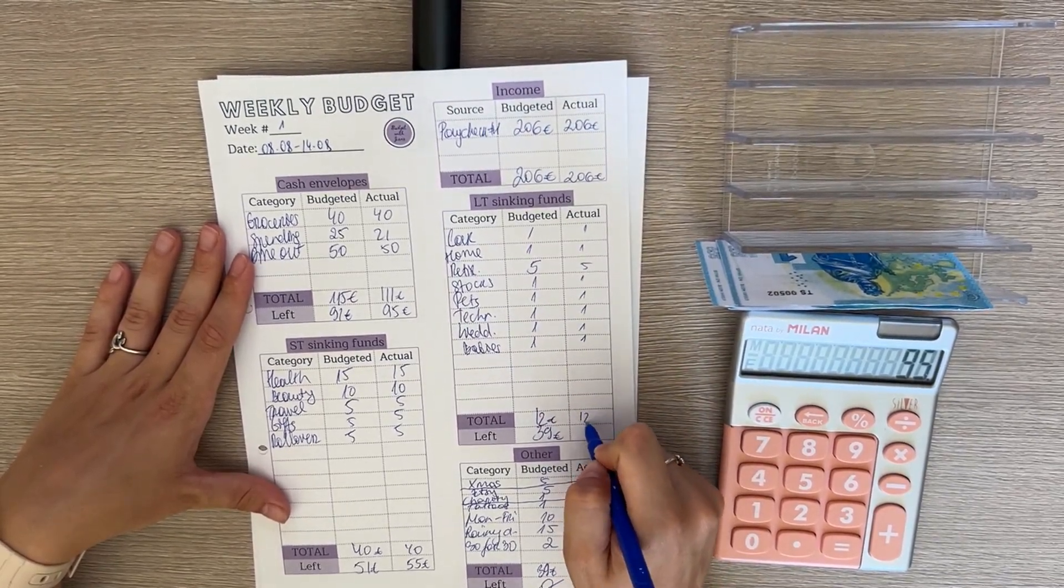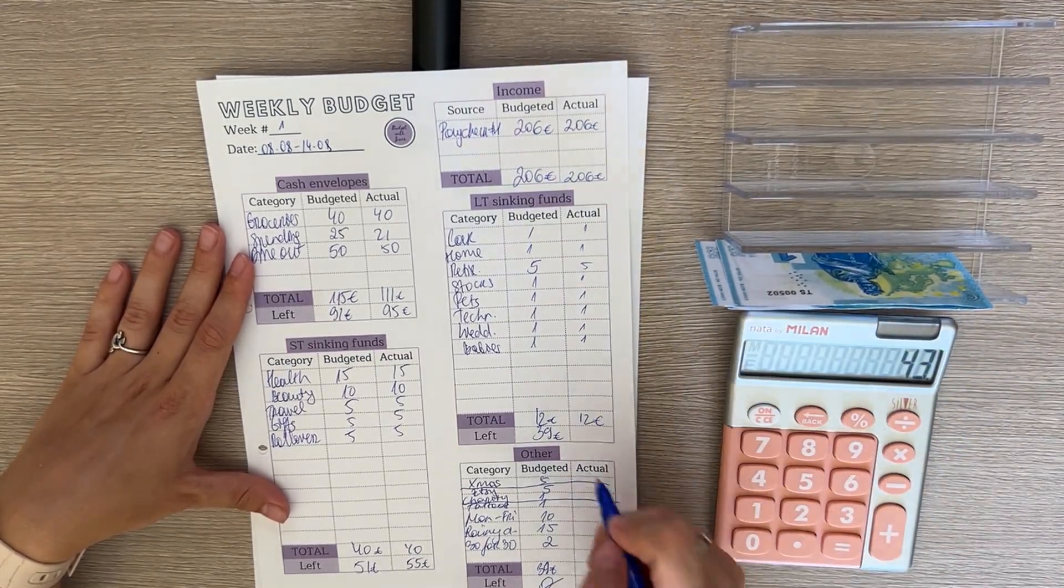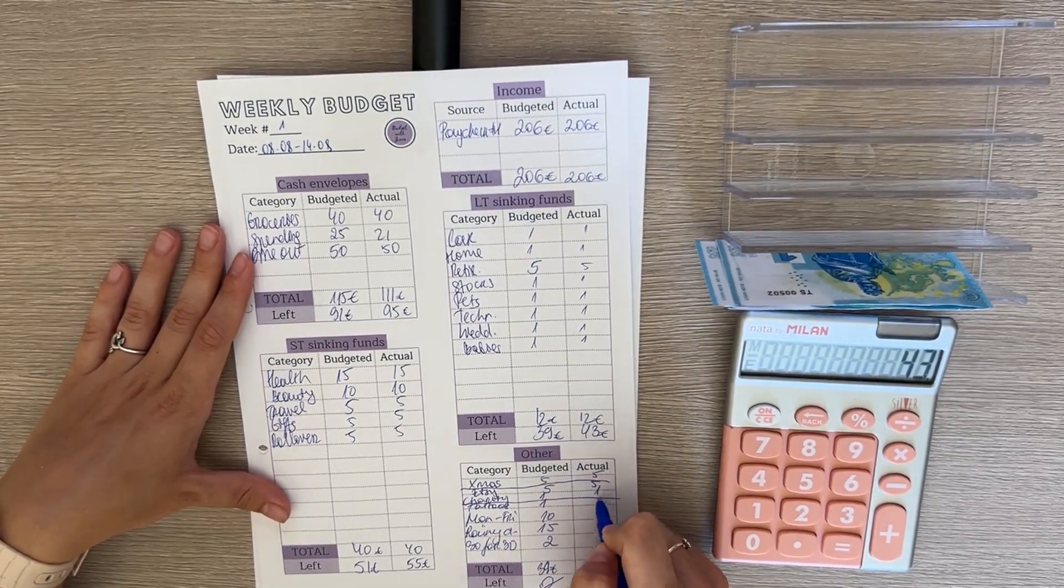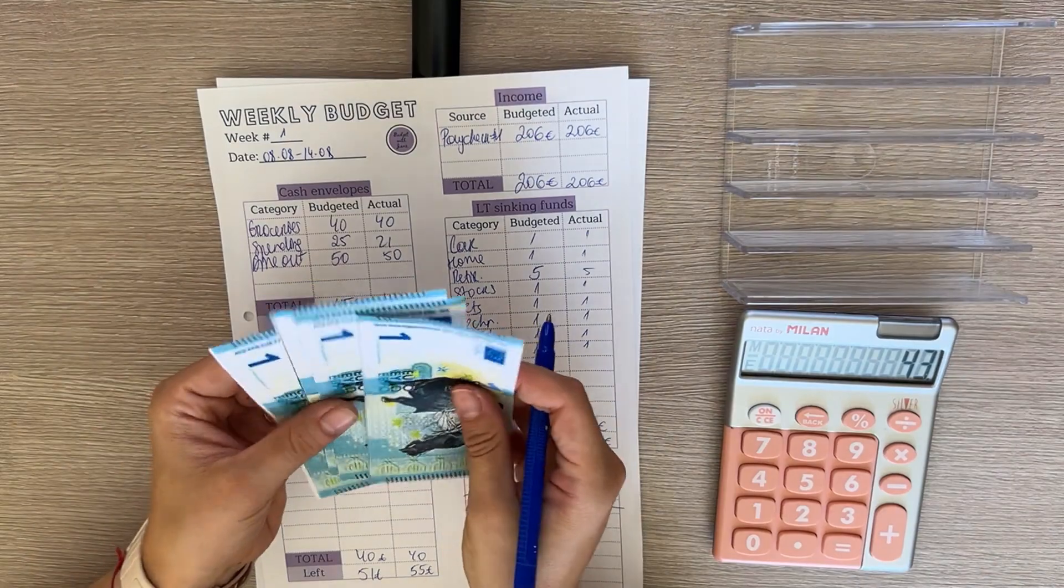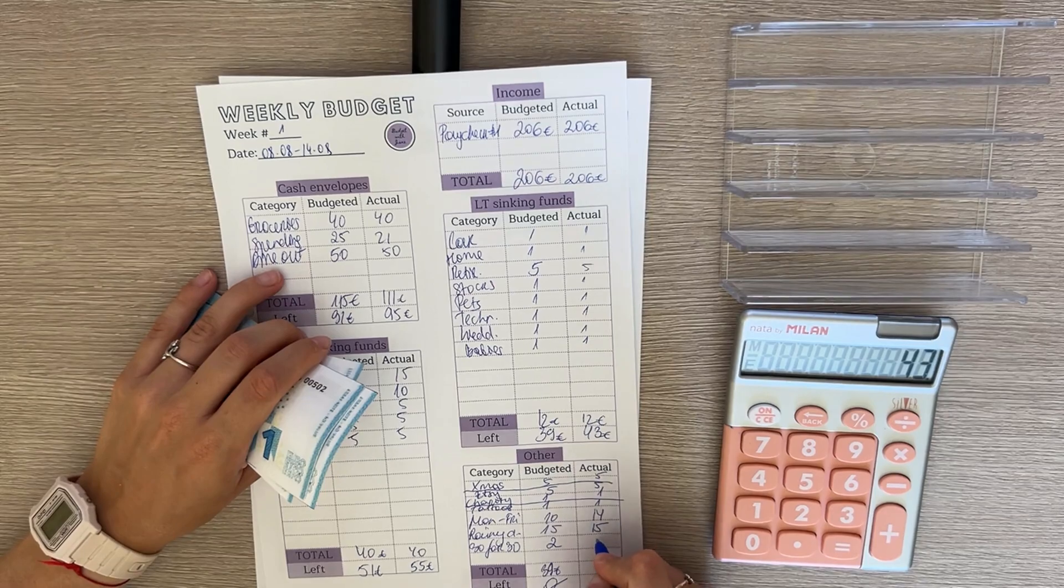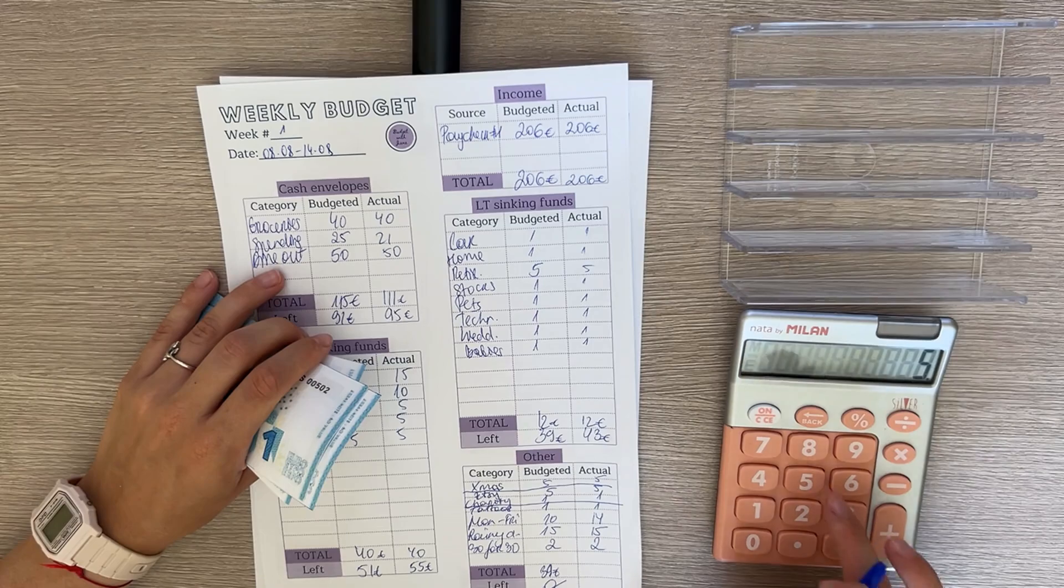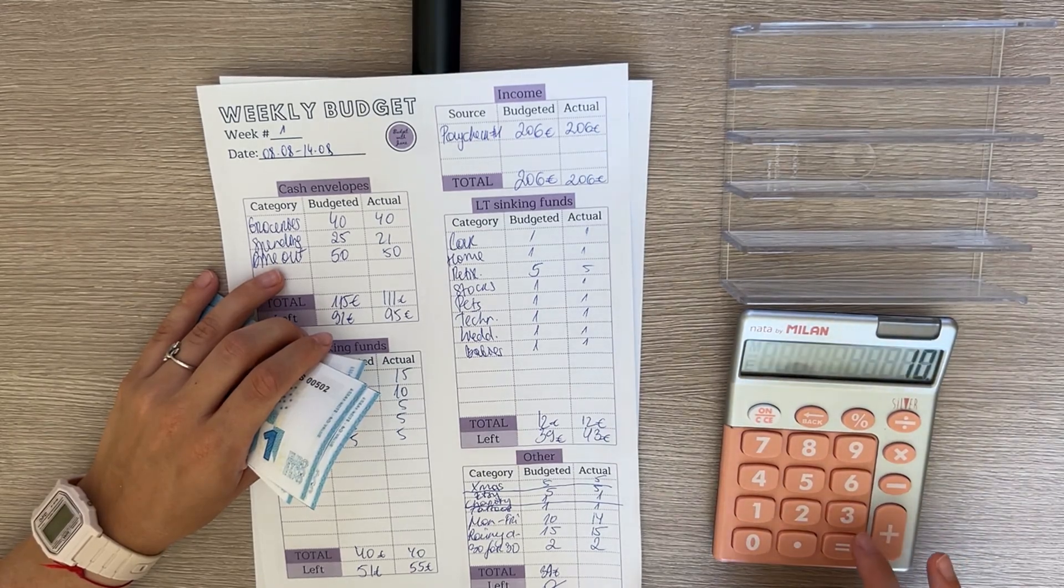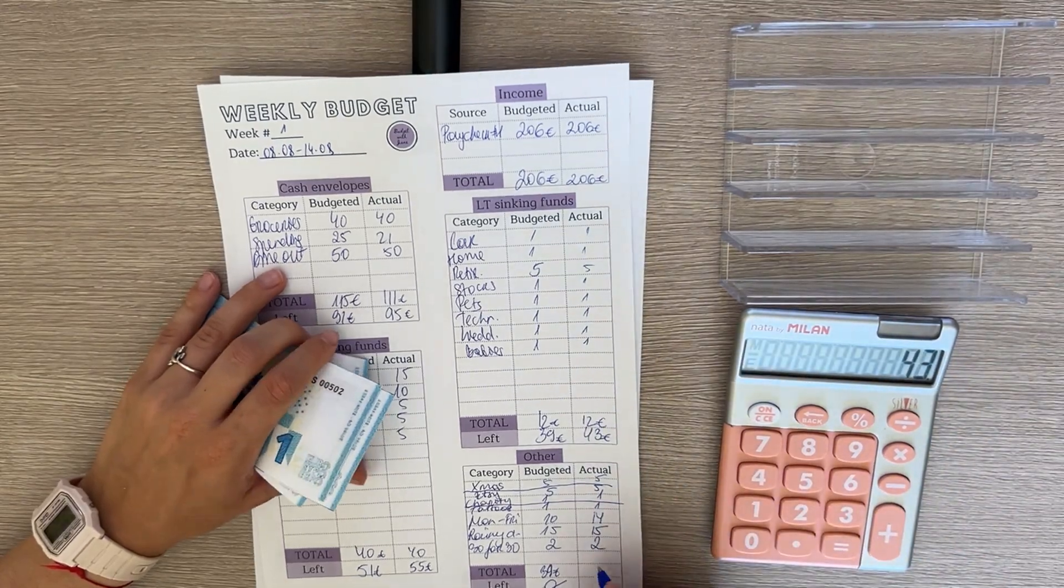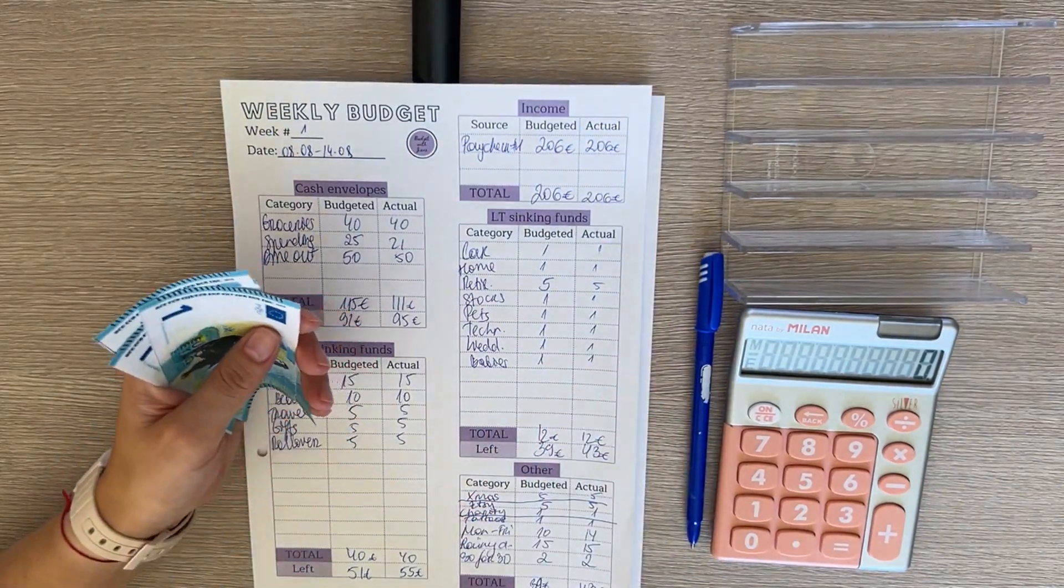So 55 minus 12 is 43. And then Christmas got 5, Etsy got 5, charity and tattoos each got 1. So these leftover 4 euros we're gonna stuff into Monday to Friday, so that's in total 14. Monday to Friday got 15 and 30 for 30 got 30, so this should be 43, which means we have zero euros left to budget, which means we didn't mess up anywhere.